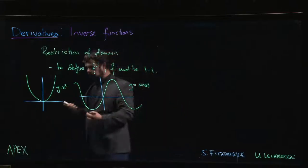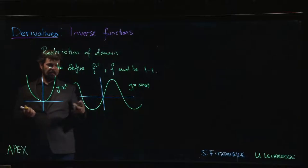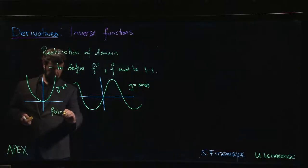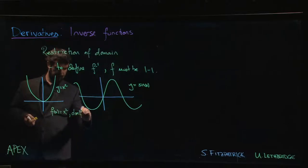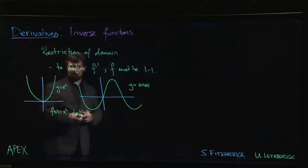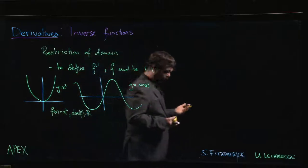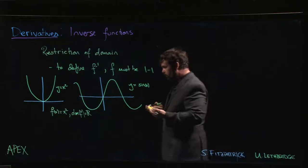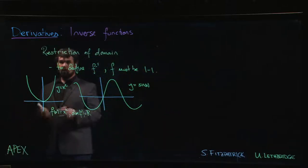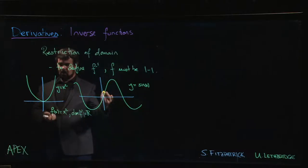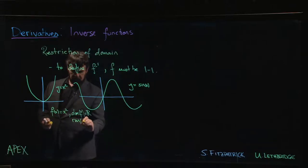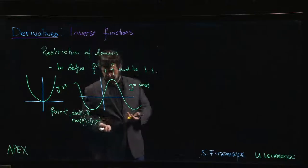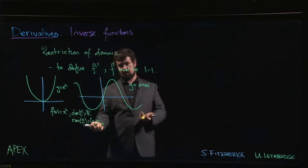These are not one-to-one functions. If we try to define an inverse for f of x equals x squared with domain ℝ, there's a problem: even setting aside the one-to-one issue, f only takes non-negative values. So we can't define an inverse as a function of any real number — we can only define it on non-negative real numbers. The range of f is zero to infinity, so that's going to have to be the domain for the inverse.